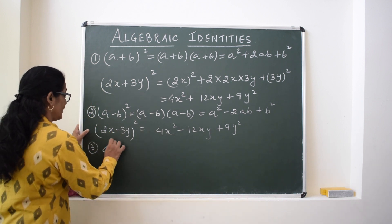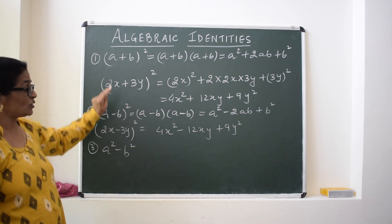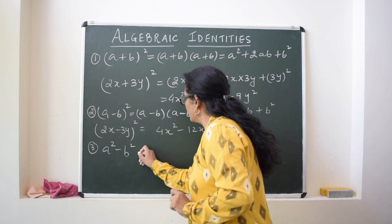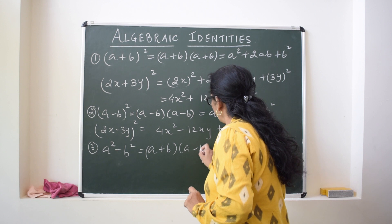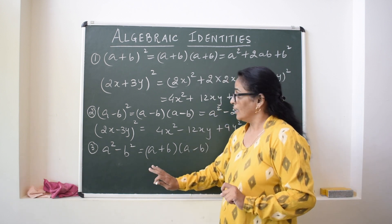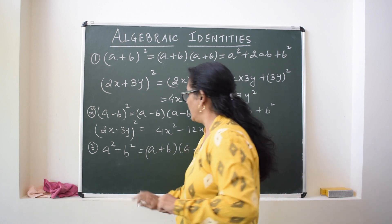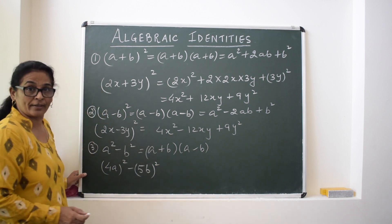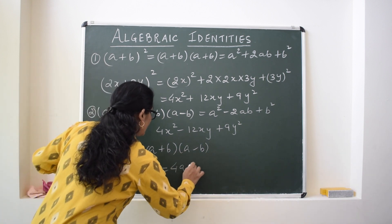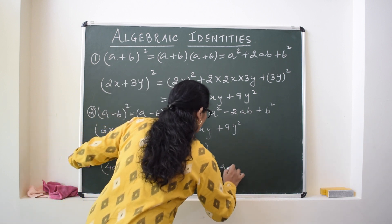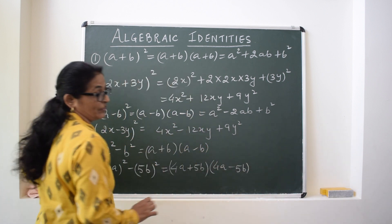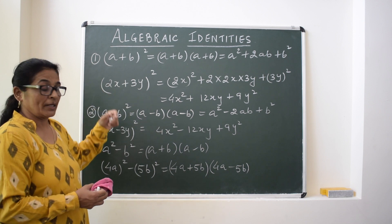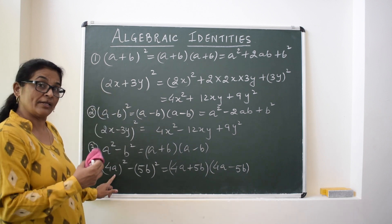The third identity is a² − b², which is not a whole square — it has one positive and one negative term. So if a question asks to expand 4a² − 5b², you can simply write it as (4a + 5b)(4a − 5b). These same identities can also be used for numbers, or for combinations of variables and constants.